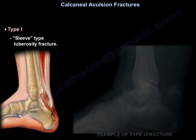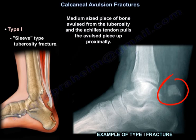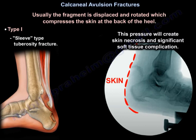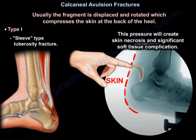Type 1 is called the sleeve-type tuberosity fracture. It is a medium-sized piece of bone avulsed from the tuberosity, and the Achilles tendon will pull that piece up proximally. Here are examples of a sleeve-type tuberosity fracture, and you can see that the piece of bone is lying directly under the skin, pressuring the skin.